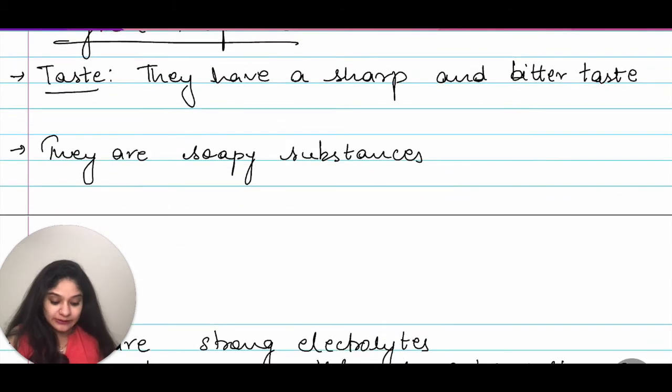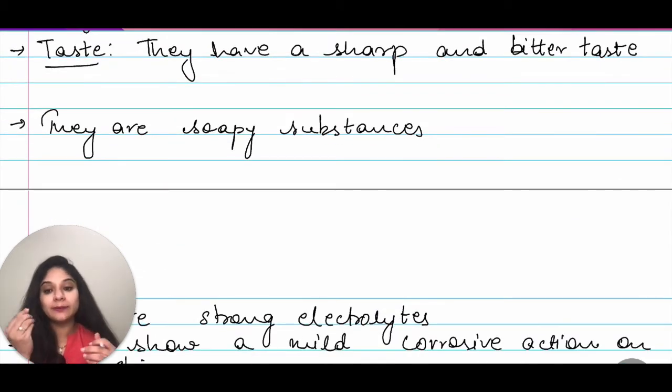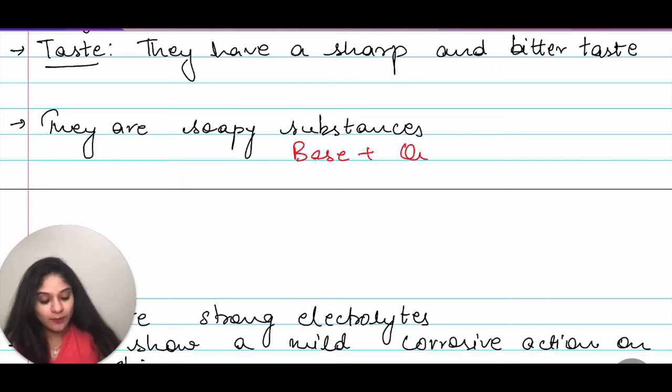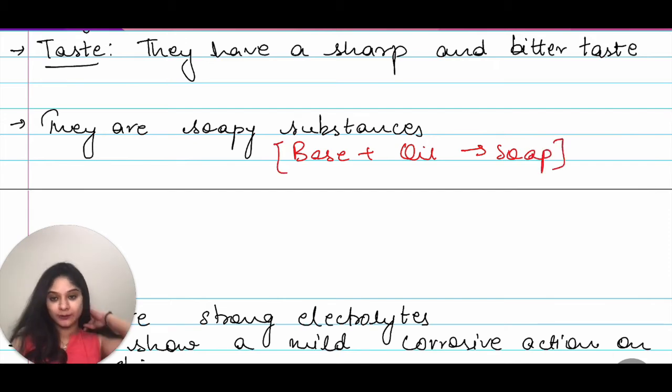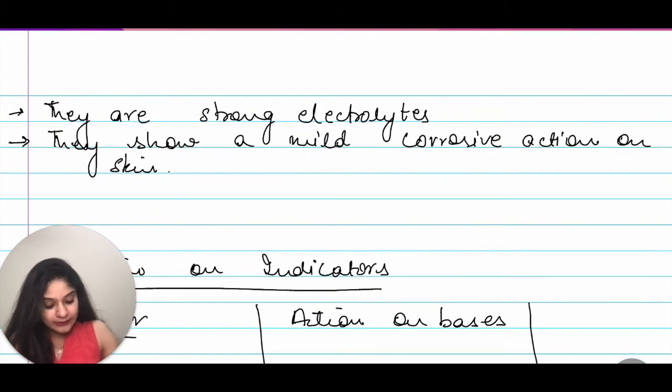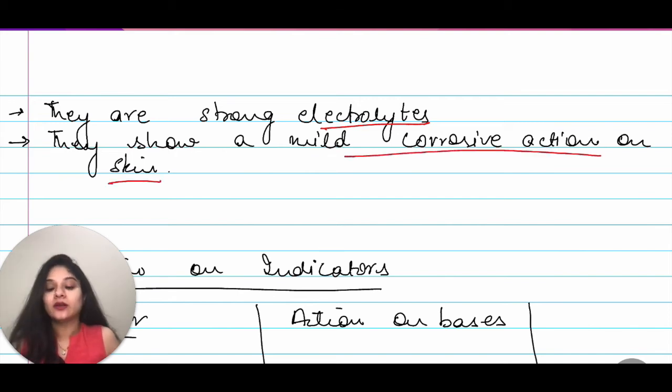Now, they are soapy substances. That means that they are slippery to touch. That also means that if you have a base and you combine it with oil that will give you a soap and the detail of this we would do when we are doing organic chemistry. Moving on. I have they are strong electrolytes. They show a mild corrosive action on skin. Acids showed us a very strong corrosive action on skin. Bases show us a mild corrosive action on skin.